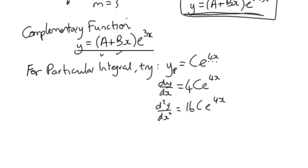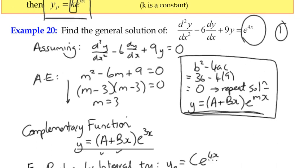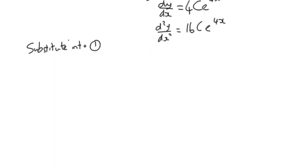We substitute into the original equation, which is d²y/dx² - 6dy/dx + 9y = e^(4x). There was no constant term.